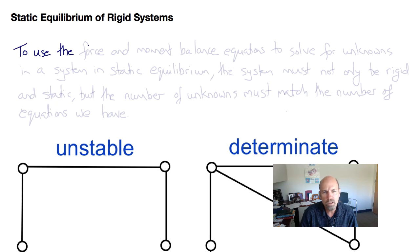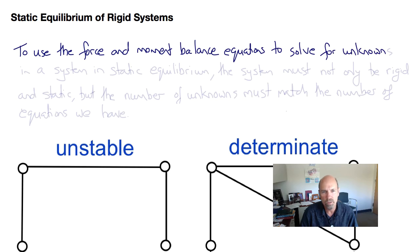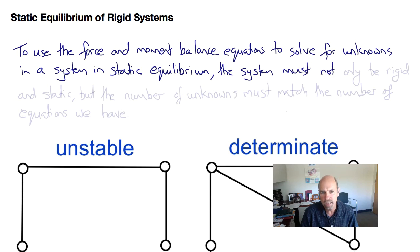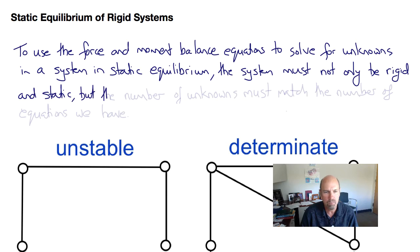In order to use the force and moment balance equations of statics to solve for the unknowns in a system in equilibrium, the system not only has to be rigid and static, but the number of unknowns must match the number of equations available from the force and moment balances.